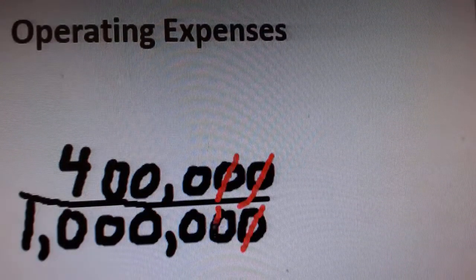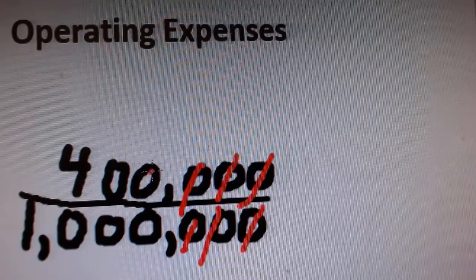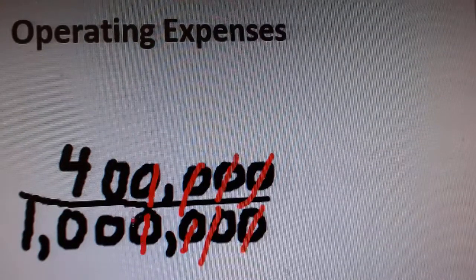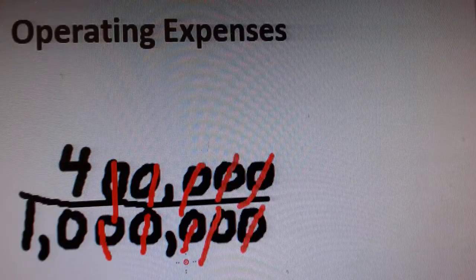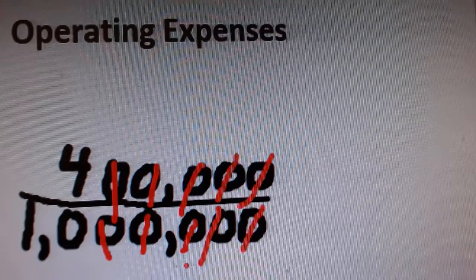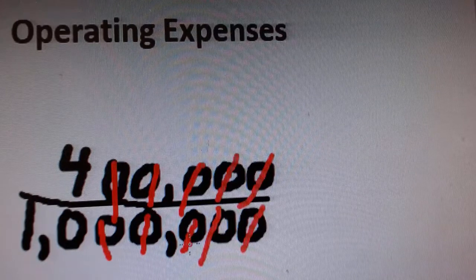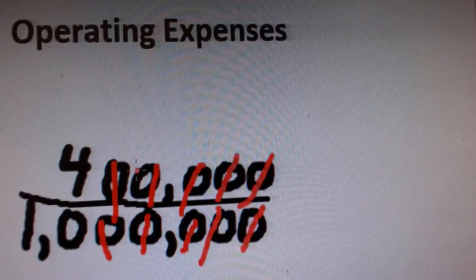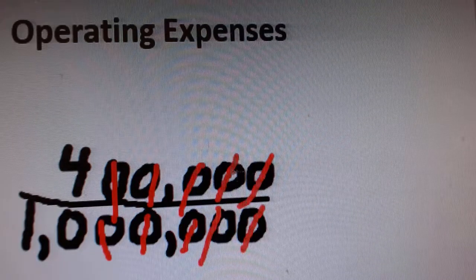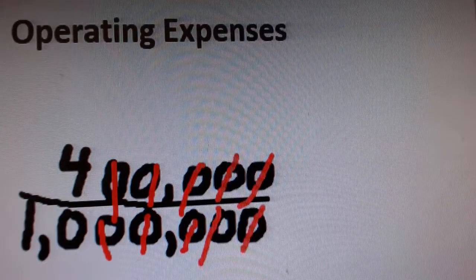I'll keep doing that until all the extra zeros are gone, which will leave me as 4 over 10. But since I have 1, 2, 3, 4, 5 zeros that matches with the five zeros in the numerator, I can divide both numbers by 100,000, and it will be 4 over 10.